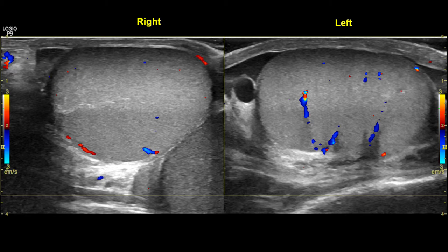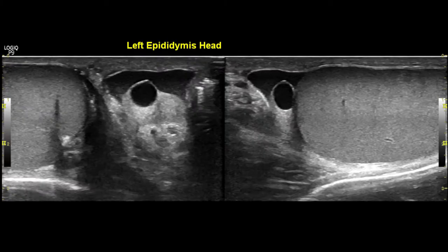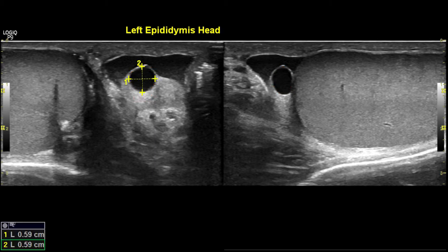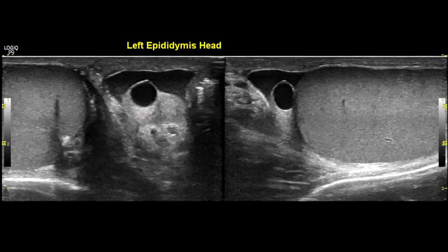Here you can see both testes. An anechoic structure is noted at the left epididymal head. Here you can see the left epididymal head and the cystic area. Adjacent to the cystic area, some collection is also seen.